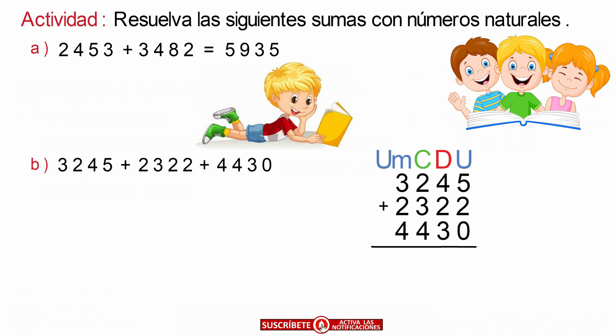En segundo lugar, sumamos los elementos de la columna de las unidades: 5 más 2 es igual a 7, y 7 más 0 es igual a 7. En tercer lugar, continuamos sumando los elementos de la columna de las decenas: 4 más 2 es igual a 6, y 6 más 3 es igual a 9.